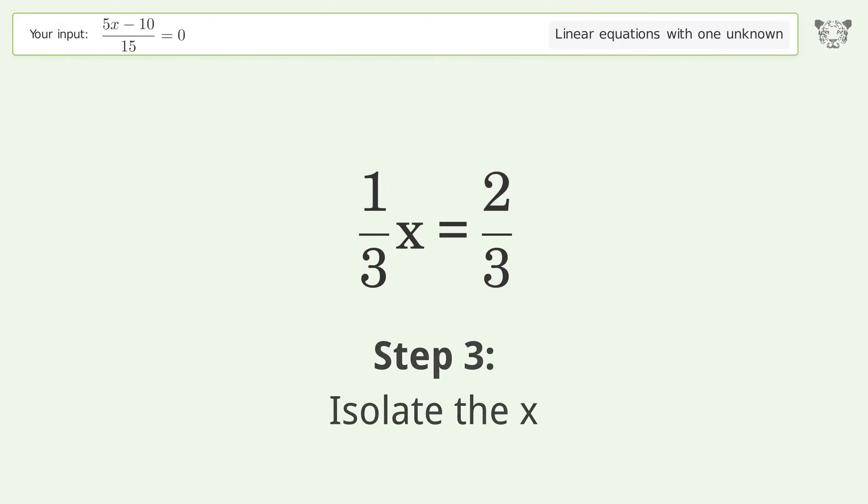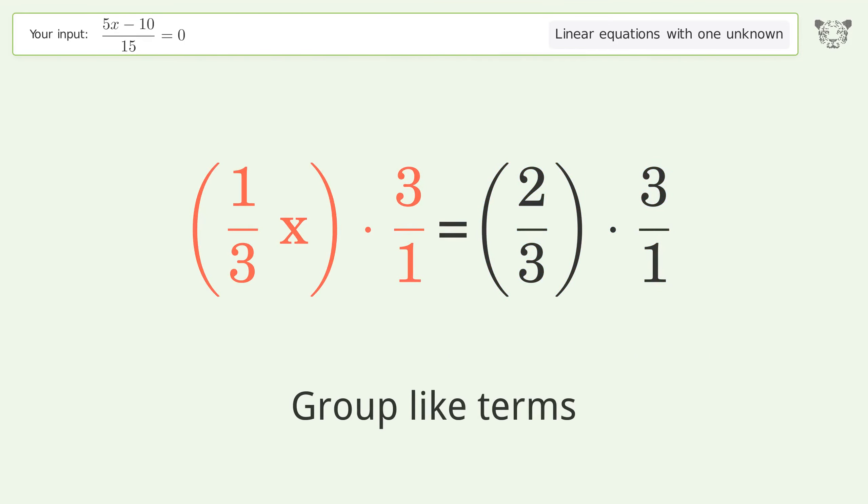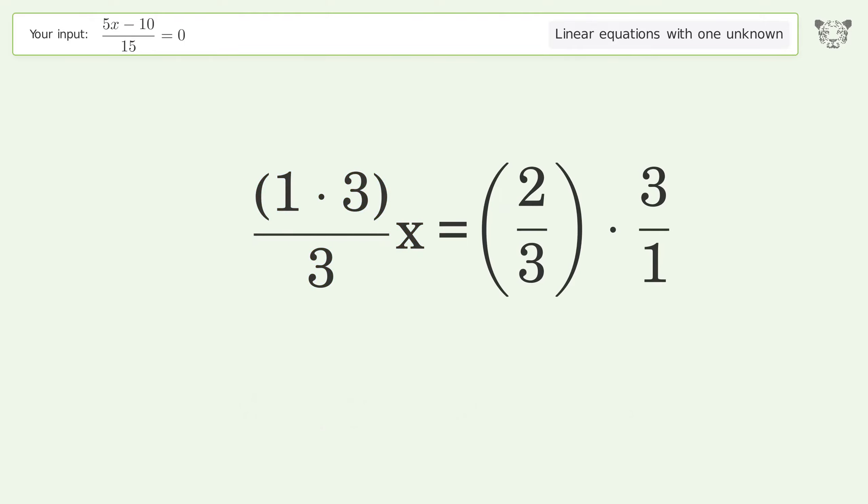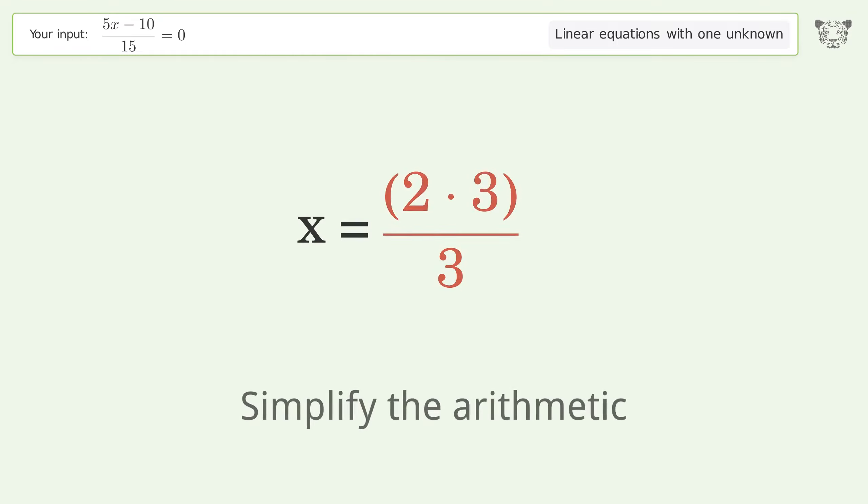Isolate the x by multiplying both sides by the inverse fraction 3 over 1. Group like terms. Multiply the coefficients, simplify the fraction, multiply the fractions, and simplify the arithmetic.